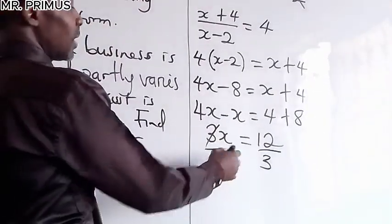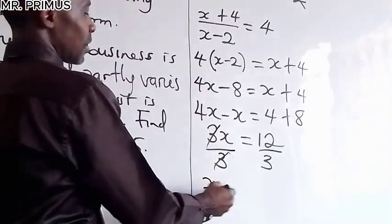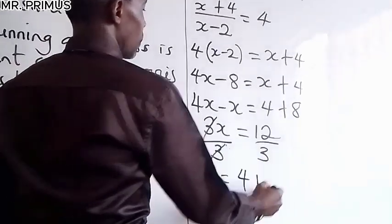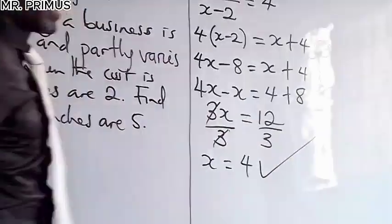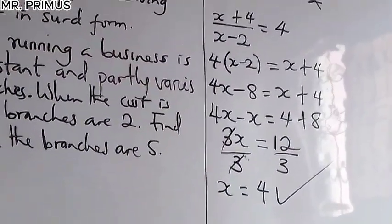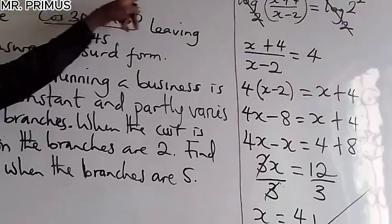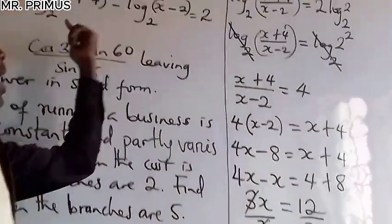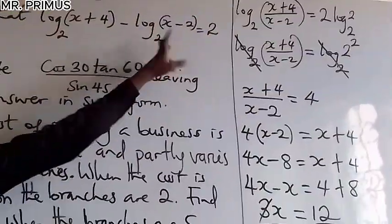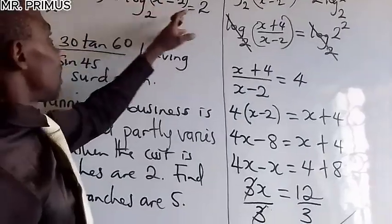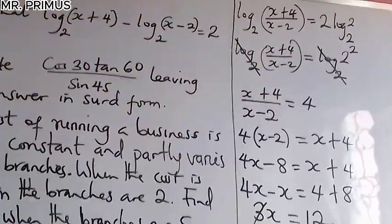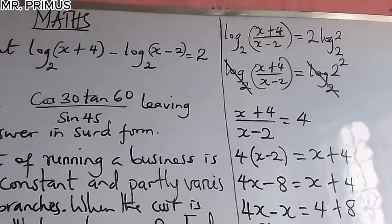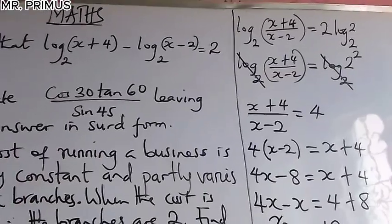Dividing both sides by 3: x = 12 / 3 = 4. You can verify: substituting x = 4 back in gives log base 2 of 8 minus log base 2 of 2 = 3 − 1 = 2. So number one is solved.